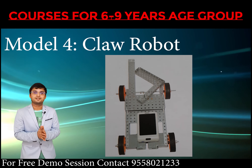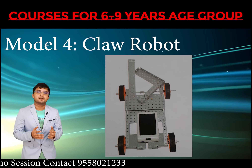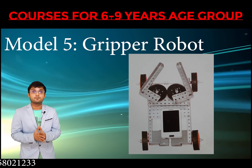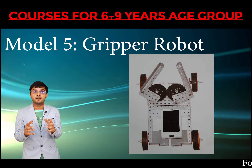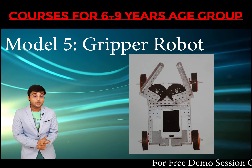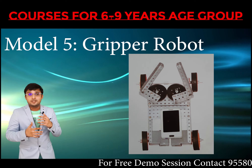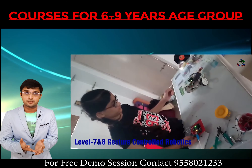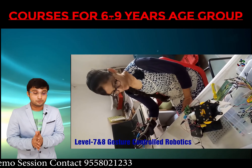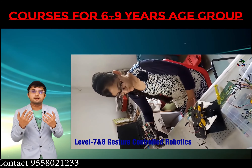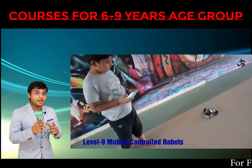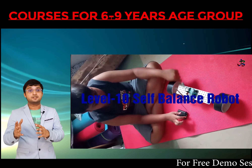The fourth model in level three is a Claw Robot — a robot that can hold objects. The fifth model is a Gripper Robot, which can pick and place materials from one location to another. These are application-based robots: gripper and claw robots are used in industries, and soccer robots are used as fun game robots in malls.